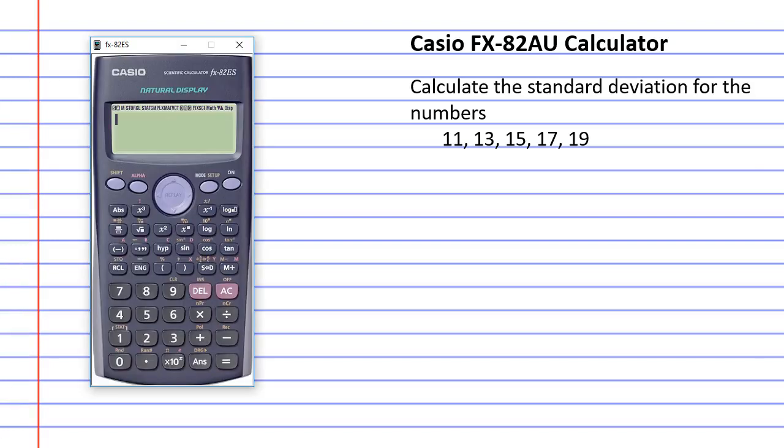Alright, we're going to calculate the standard deviation using the Casio FX-82AU calculator. Now, first thing you might notice is the calculator I have says FX-82ES. My students use the AU calculator and they work exactly the same when you are calculating standard deviation. So, we're going to calculate the standard deviation using the following five data values that we're going to enter into our calculator.